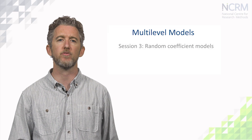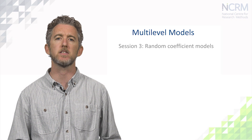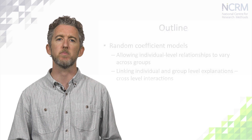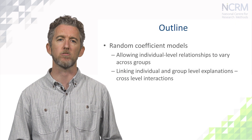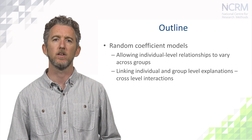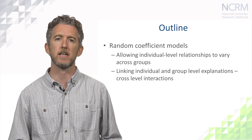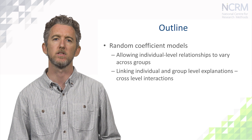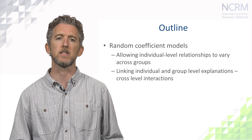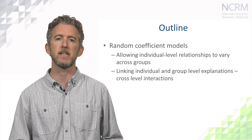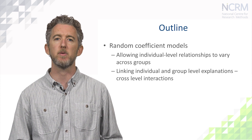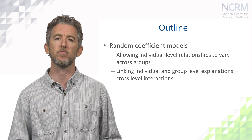In this third video on multilevel modelling we will consider the random coefficient model. This extends the random intercept model by relaxing the assumption that the relationship between our dependent variable and the explanatory variables is the same across all groups. This can be used for continuous or categorical explanatory variables. We will also consider the use of cross-level interactions to examine how the strength of an individual level relationship may be moderated by an included group level effect.